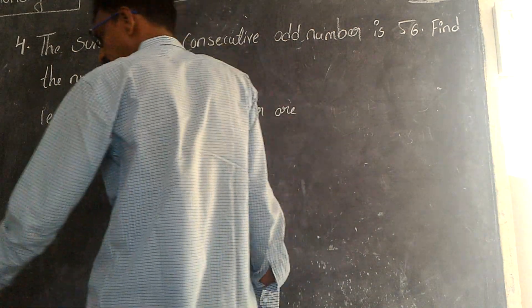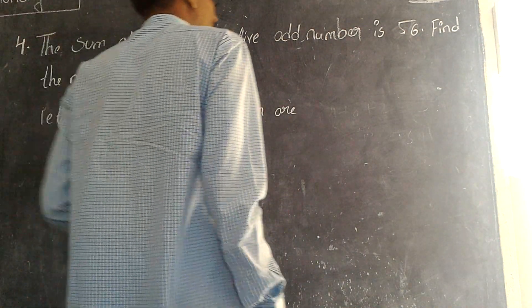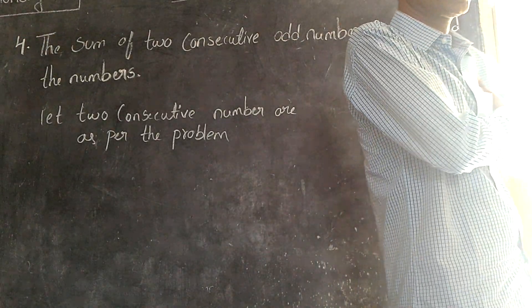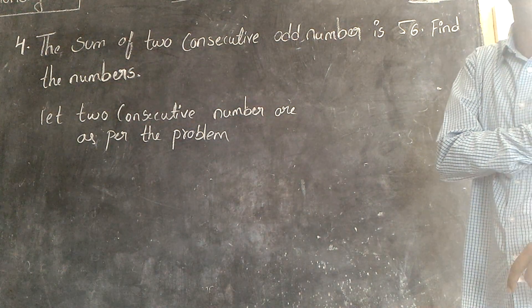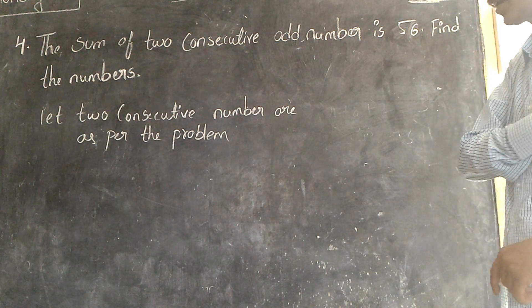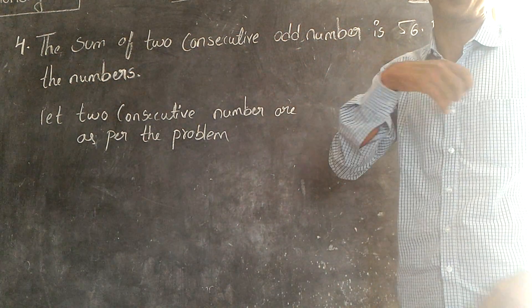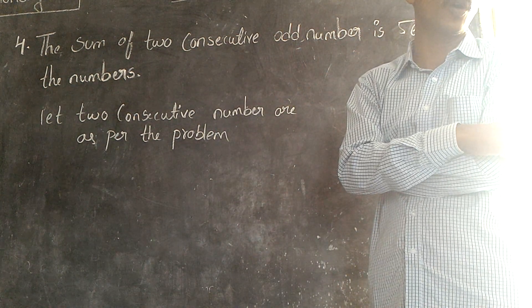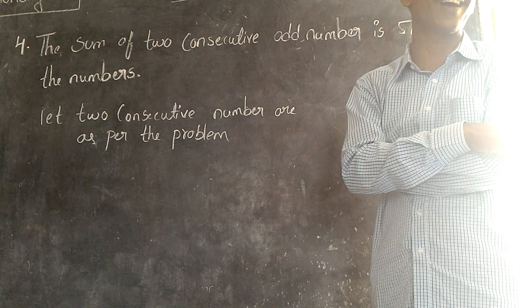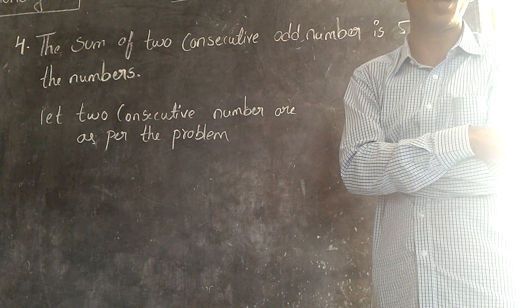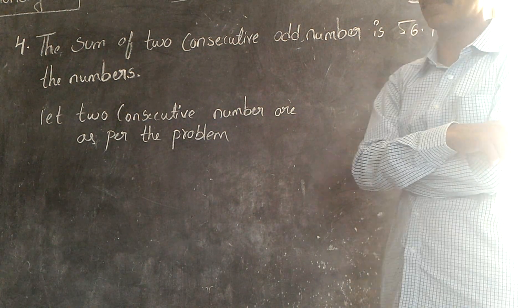The sum of two consecutive odd numbers is 56. This is a very important point here. The sum of two consecutive odd numbers. First you should know what are those consecutive odd numbers.